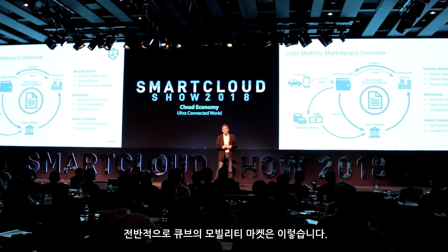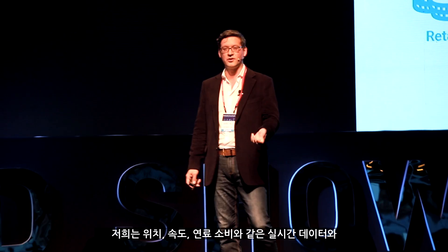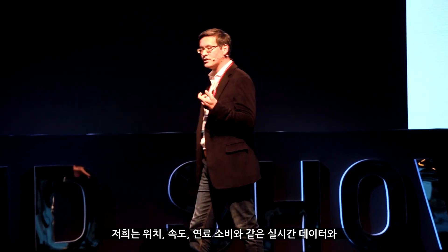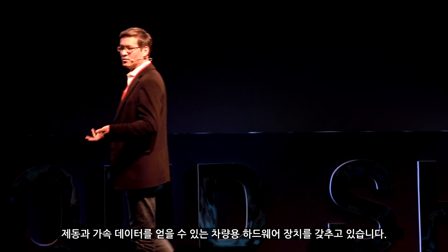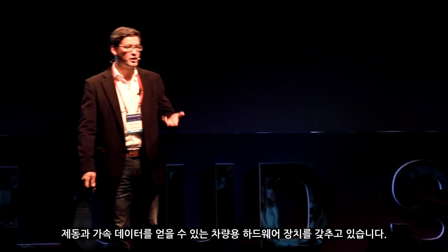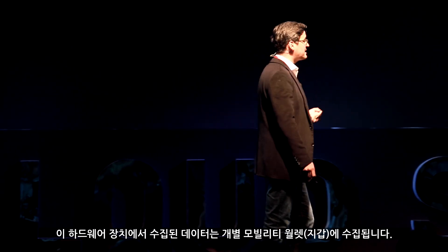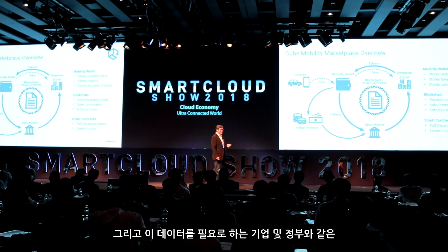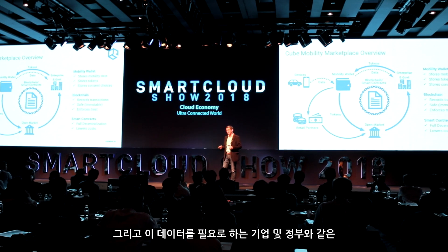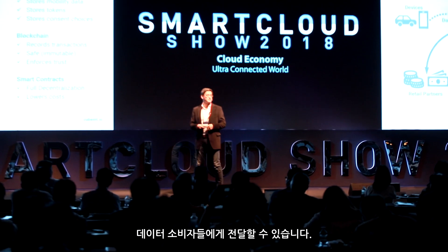Our Cube Mobility marketplace looks like this. We have a hardware device that plugs into your car where we can get real-time data such as location, speed, fuel consumption, and whether you're braking or accelerating too fast. All this data is collected in individual mobility wallets and passed on to various data consumers such as enterprises and governments that may need this data for their own businesses.